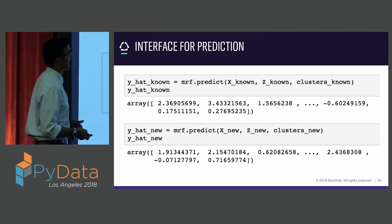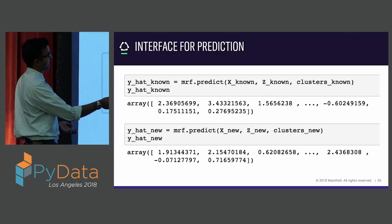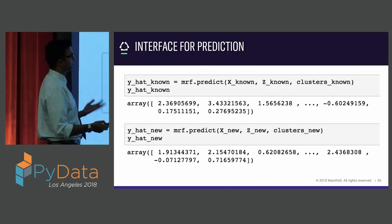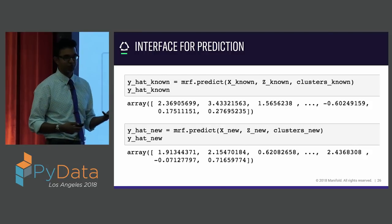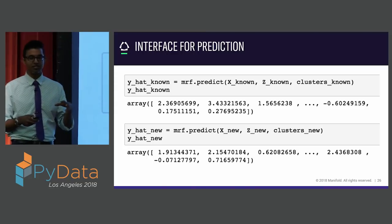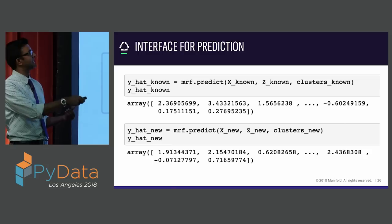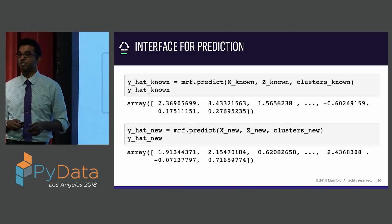When you go to predict, it's simple: call .predict and pass in X, Z, and what cluster it came from. The package under the hood takes care of whether it came from a known cluster or a new cluster — you as a user don't have to specify that. Internally it holds what cluster IDs it has seen; if it has seen it, it applies the correction; if not, it uses the default random forest prediction.